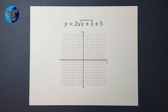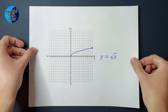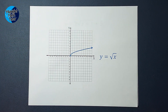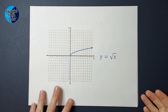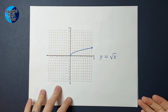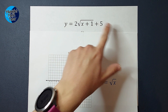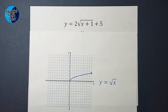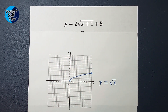When we are graphing an equation like this, we like to use what is called a parent graph. So if I were just being asked to graph y equals the square root of x, this is what my graph would look like. But we have other things happening here — we have a 2, a 1, a 5. So how does that affect this graph?